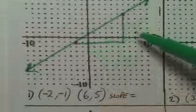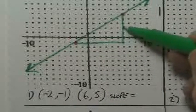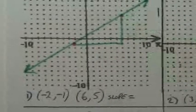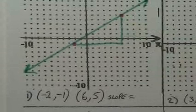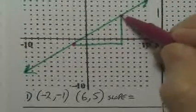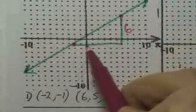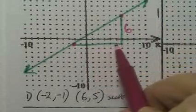And we count how tall it is. Our rise here is one, two, three, four, five, six. It rises six. The run is one, two, three, four, five, six, seven, eight.